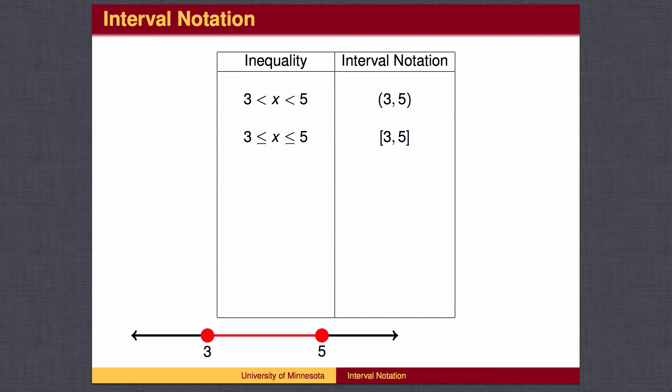If we have less than or equal to, instead of strictly less than, we use pointed brackets. The interval with pointed brackets includes the endpoints. The interval with rounded parentheses does not include the endpoints.